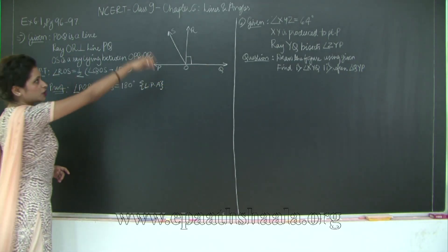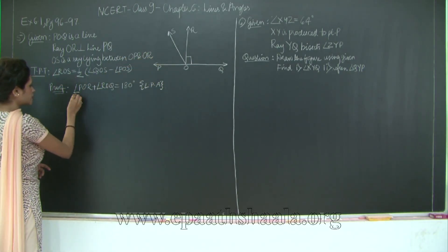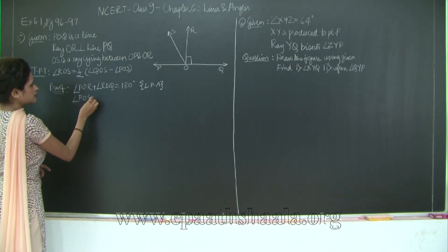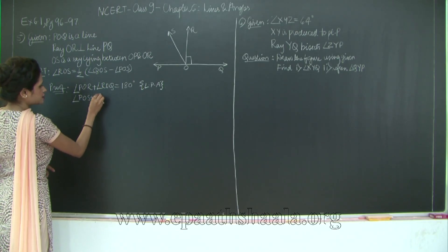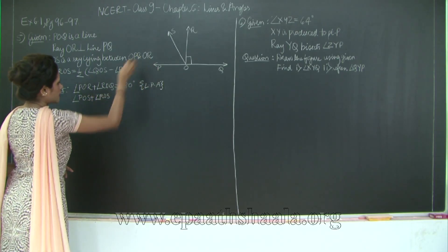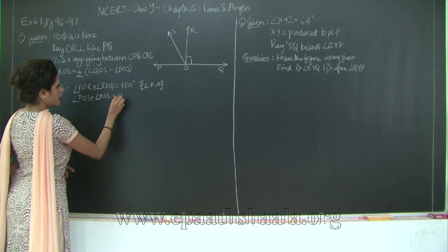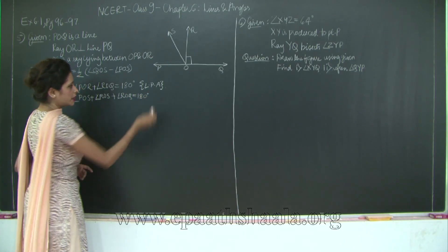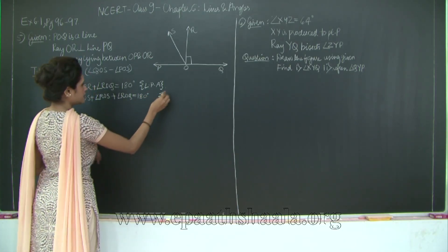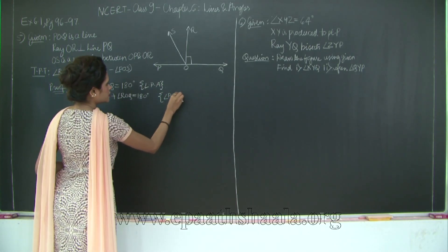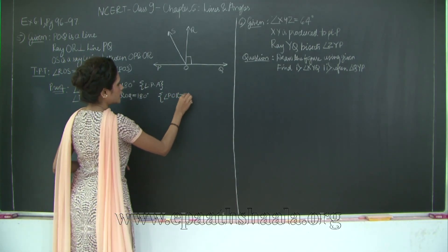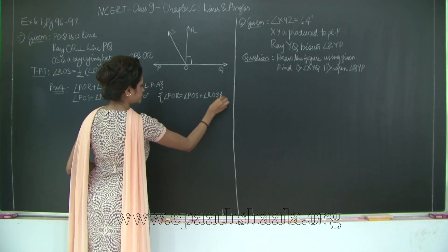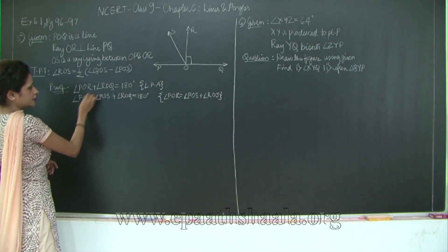But angle POR can be split into angle POS and angle SOR. So let us rewrite this: angle POS plus angle ROS plus angle ROQ equals 180 degrees, since angle POR equals angle POS plus angle ROS. I have split this angle into these two angles.